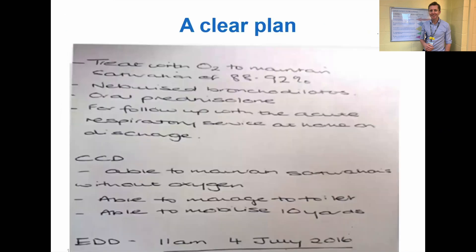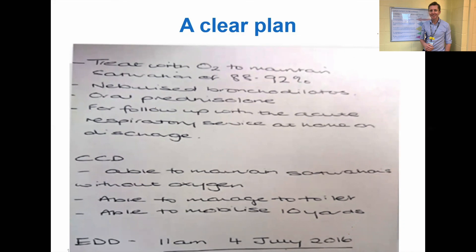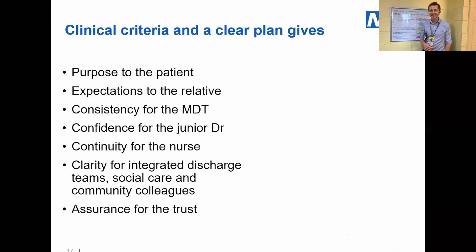Here's an example of a good plan, which includes both. This could be for a COPD patient: treat with oxygen to maintain SATs above 88%, nebulised bronchodilators, oral prednisolone, follow-up with the acute respiratory service at home team on discharge. Clinical criteria: able to maintain saturations without oxygen to the level above. Functional criteria: able to manage the toilet, able to mobilise 10 yards. Expected date of discharge: 11 o'clock, 4th of July 2016. Independence Day. Have you got in your areas — or could you encourage your team to write a plan as clear as that?